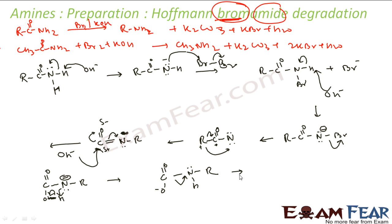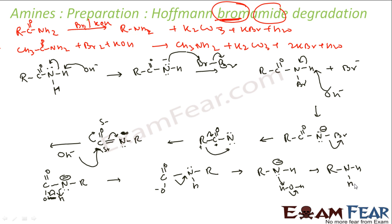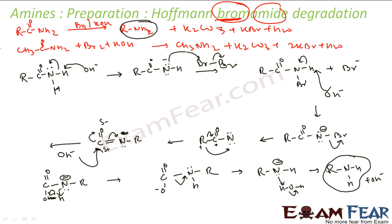What you get is R-N⁻-H. Now we have a lot of water here. Water will react, H2O. This negative charge nitrogen will attack on this hydrogen and this bond will break as OH⁻. What I will get is R-NH2. This is the reaction mechanism for the Hofmann Bromide reaction.